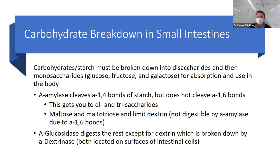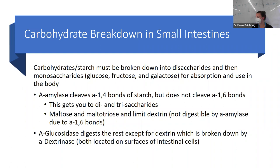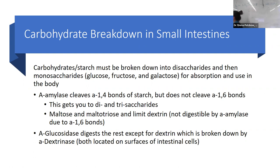Alpha amylase can cleave the alpha 1-4 bonds of starch but can't cleave alpha 1-6 bonds, so it can get you to a di- or trisaccharide. From there, you have to digest the rest. Maltose, maltotriose, and limit dextrin are not digestible by alpha amylase due to those alpha 1-6 bonds. Alpha glucosidase digests the rest of our di- or trisaccharides, except for dextrin, which is broken down by alpha dextrinase. Both are located on the surfaces of intestinal cells.